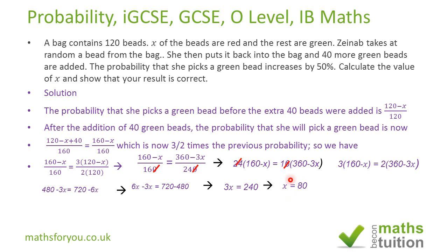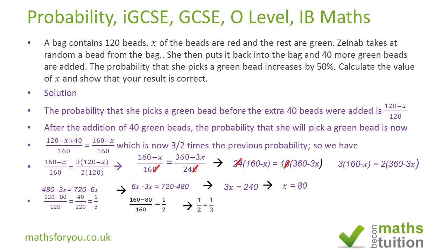Now we have to check. If we substitute X equals 80 into the first probability, we end up with 1 over 3 as the probability. If we then substitute X equals 80 into the second probability of picking a green, the probability is then one half. If we divide one half by one third, we end up with 3 over 2, and that matches what we were given.